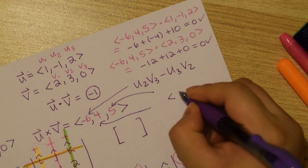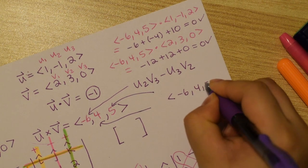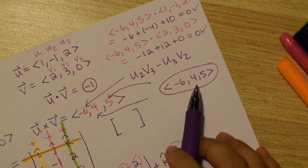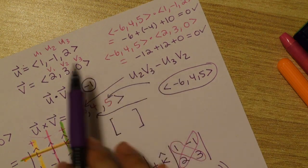So our answer of negative 6, 4, and 5 is our cross product. And indeed, we verified that it is perpendicular to u and perpendicular to v.